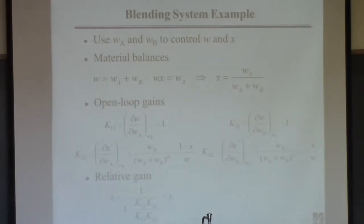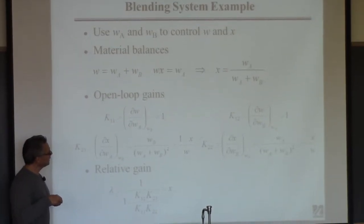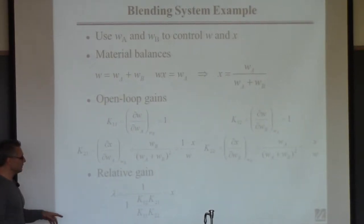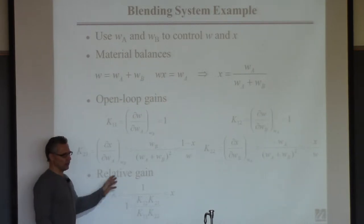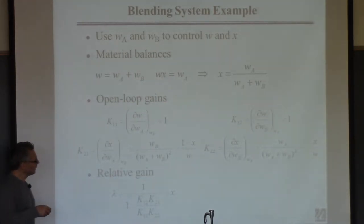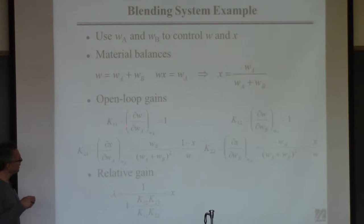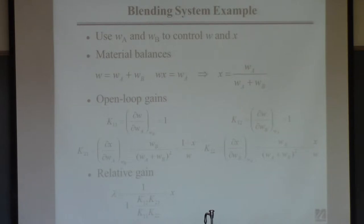Now, if we want to calculate the relative gain, this is a 2x2 system, so we only need to calculate one lambda and we'll know all the other lambdas. So this is lambda 1,1. You use the formula I gave you for the 2x2 system — it's 1 over 1 minus these gains. You know all these gains because you just calculated them. Plug them in, do all the simplification, and you'll see that's equal to X.